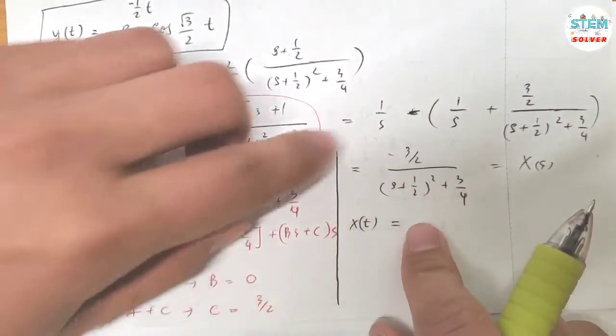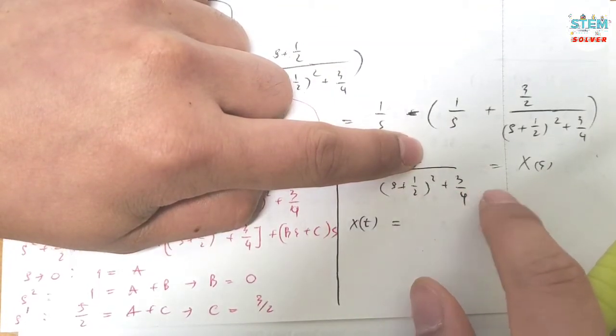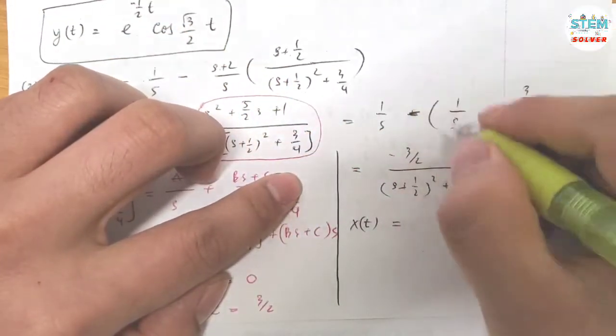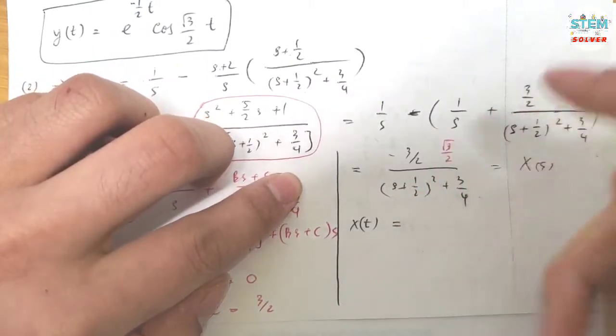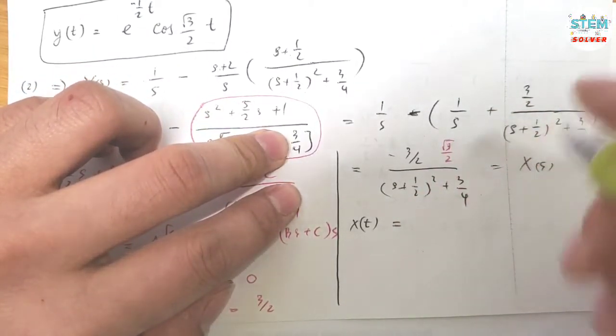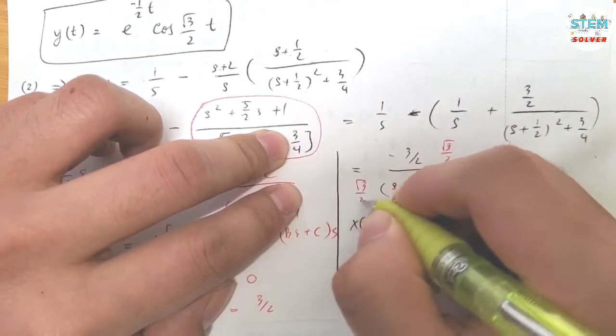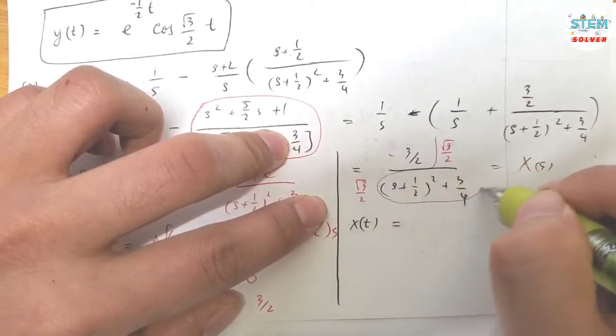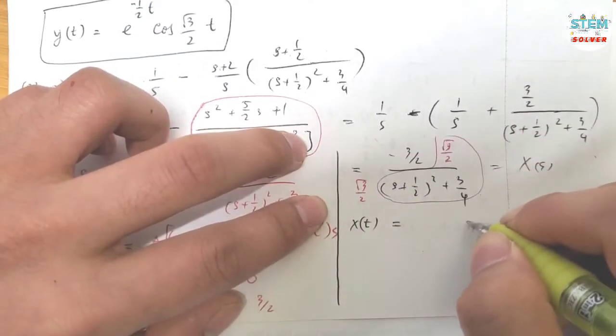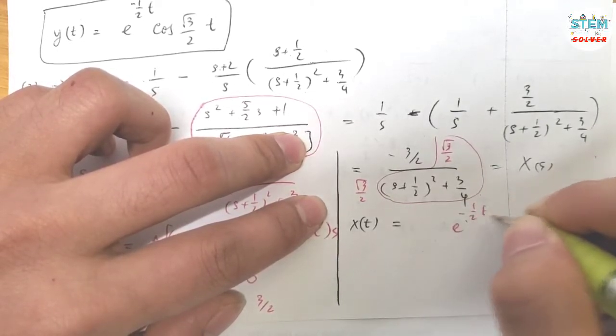So this is similar. If you notice, we have a sine function here. We have √3/2 on top, right? Because you have √3 over 2 when you take the Laplacian. So I multiply the top by √3/2. I need to multiply the bottom by that. So that gives me e^(-1/2·t).